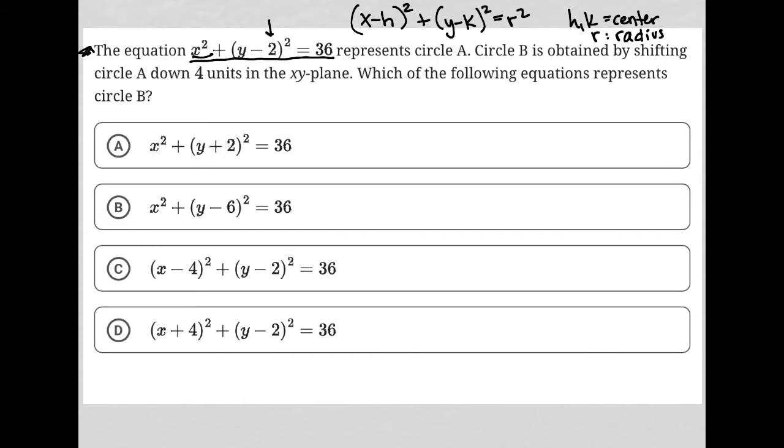Our k value is 2, so that means the center of the circle is at 0 comma 2. And then r squared is 36, which means the radius is actually just equal to 6, because if r is 6, then that's why r squared would be 36.